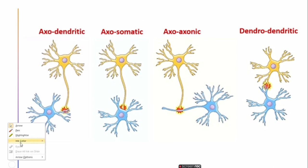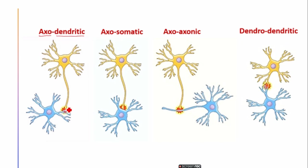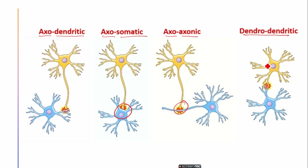Moving forward: axodendritic synapse means axon of one neuron with dendrites of another neuron — here you can see the axon and dendrites. Axosomatic means axon of one neuron and the cell body of another neuron. Axo-axonic means axon of one neuron and axon of another neuron. Dendrodendritic means dendrite of one neuron and dendrites of another neuron — here you can see this case.